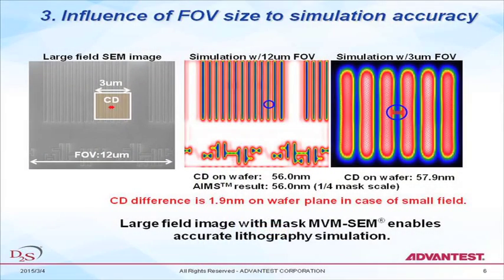This shows a SEM image with a 12-micron field of view, along with the simulation result of CD on the wafer. In this case, 56 nanometers was simulated with the large field of view. On the other hand, if the simulation uses a smaller field of view — like 3 micron by 3 micron — the CD value changes. This type of evaluation is well known from many papers, and we confirm our performance is similar to previous tools.